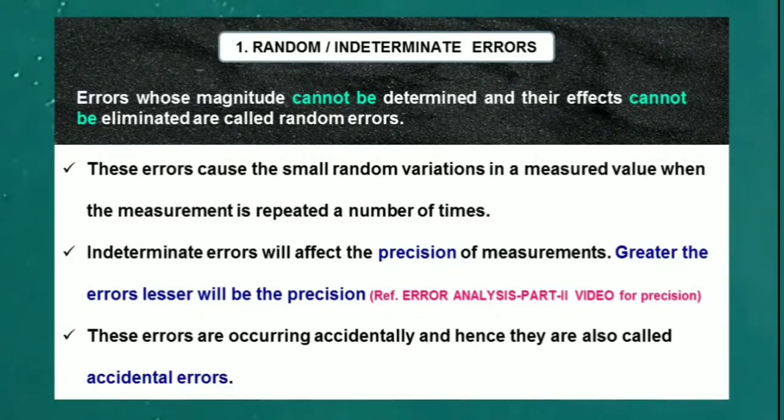Random or indeterminate errors are errors whose magnitude cannot be determined and their effects cannot be eliminated. These errors cause small random variations in a measured value when the measurement is repeated a number of times. These errors will affect the precision of measurements—greater the errors, lesser will be the precision.